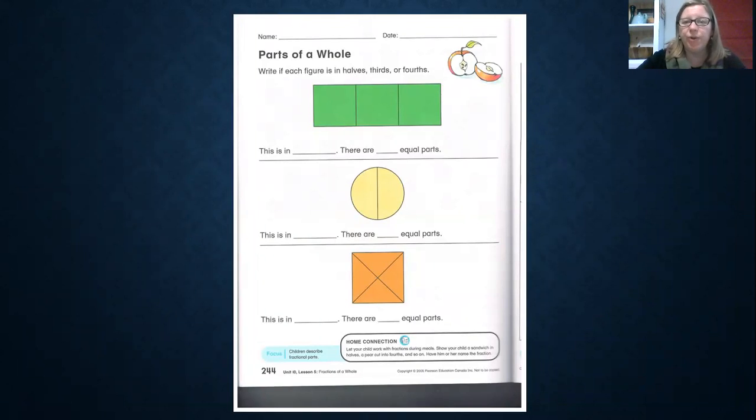Now on page 244 of your Math Makes Sense book this week, or today, you will be practicing fractions of a whole. So when you look at each of these pictures, it might help you to imagine what they might be if they were food. Maybe this is a whole long tray of jello. And maybe this is a cake or a cupcake. Maybe this square is a sandwich. Now, after you have imagined it and made a little bit more fun, I would like you to write if each figure is in halves, thirds, or fourths.